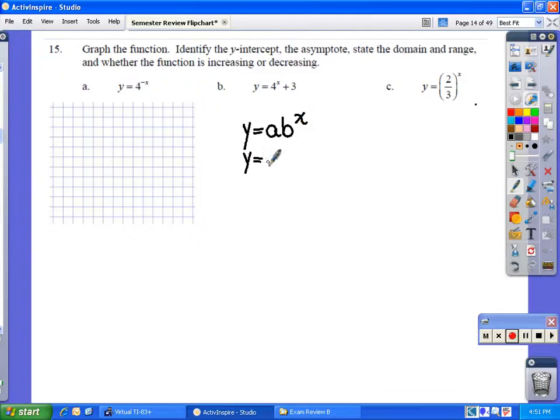Comparing y equals 4 to the negative x, we realize that a is equal to 1. This is our base, b, is equal to 4. And 4 would generally denote a growth function. However, in this case, we have a negative exponent.